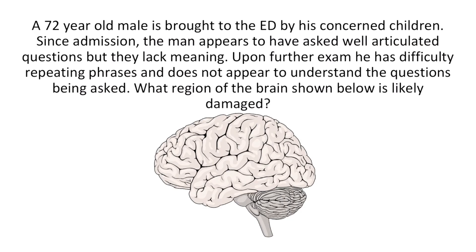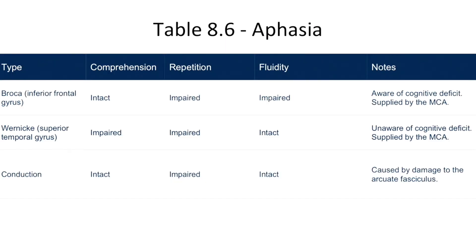A 72-year-old male is brought to the emergency department by his concerned children. Since admission, the man appears to have asked well-articulated questions, but they lack meaning. Upon further exam, he has difficulty repeating phrases and does not appear to understand the questions being asked. The patient is asking well-articulated questions that lack meaning — this refers to fluidity, and this type of fluidity that lacks meaning is specific for Wernicke aphasia. Wernicke's area is located in the superior temporal gyrus. From Table 8.6, Wernicke aphasia results in impaired comprehension and impaired repetition with intact fluidity.